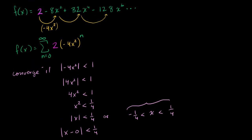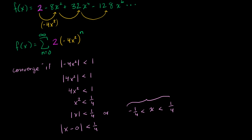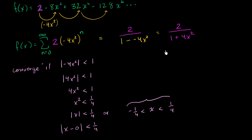Now, having established where this converges, let's think about what it converges to. This is going to be equal to our first term, 2, over 1 minus our common ratio, negative 4x squared. So this gives us 2 over 1 plus 4x squared. This closed-form expression equals the infinite series as long as x is within our interval of convergence.